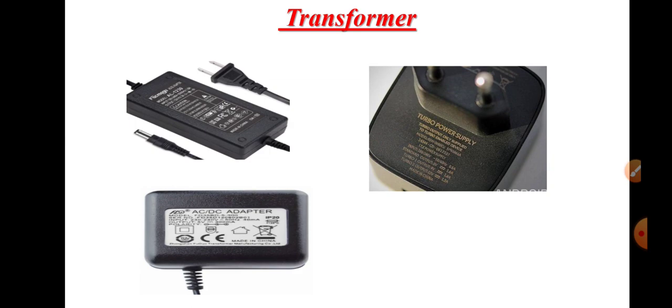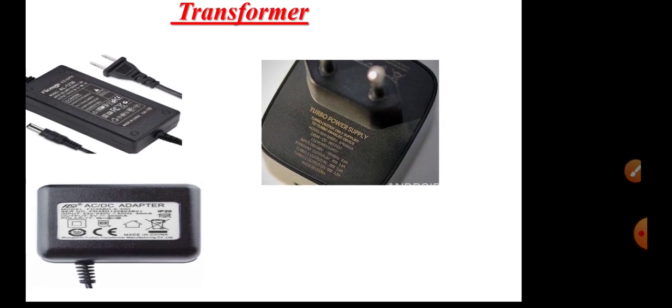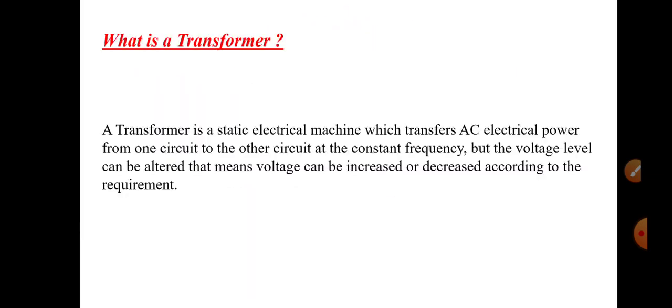This change happens because of the transformer. So what is a transformer? The transformer is a static device which transfers electrical energy or power from one circuit to another circuit at constant frequency — meaning without any change in frequency — but the voltage range can be changed, meaning it can increase or decrease as per our requirement.